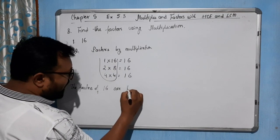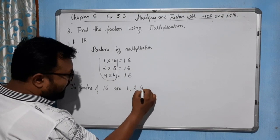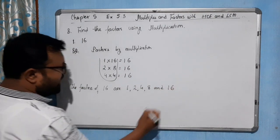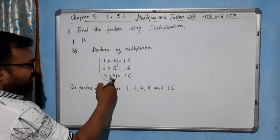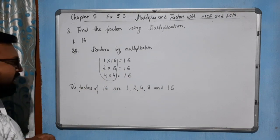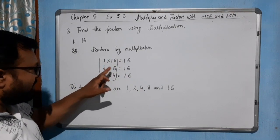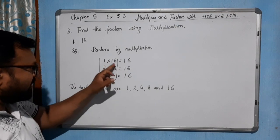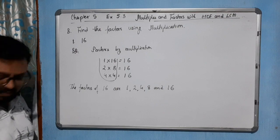The factors of 16 are 1, 2, 4, 8, and 16. For the same number we will use 1 once. So 1 is a factor of 16, 2 is also a factor of 16, 4 is a factor of 16, 8 is a factor of 16, and 16 is a factor of 16. Now come to the next question, which is 21.